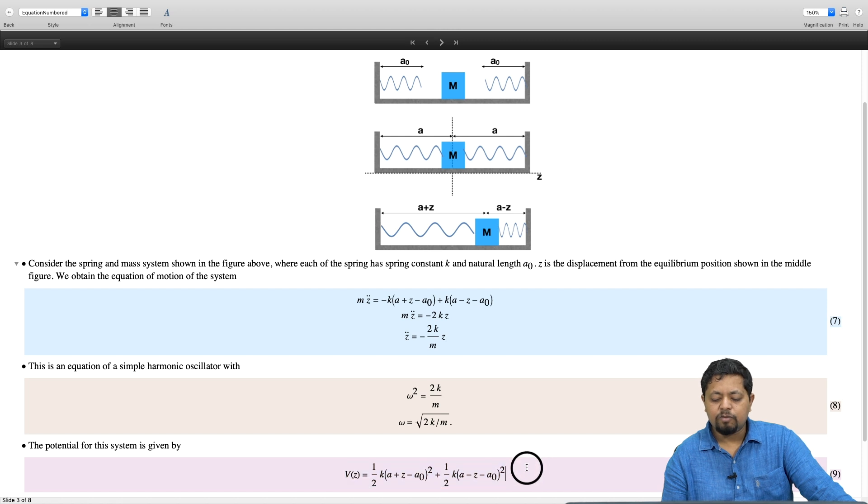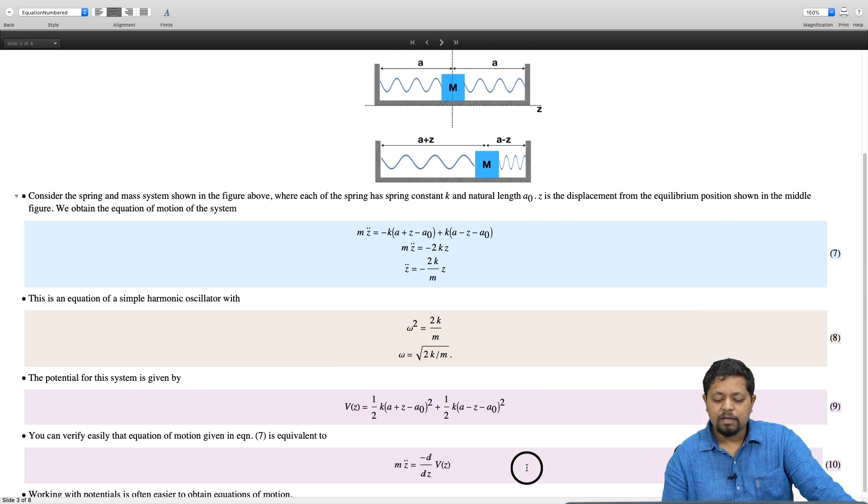And my equation of motion is simply given by mz double dot equal to minus d by dz of the potential because force is minus the gradient of the potential. Therefore, mz double dot is minus d by dz of the potential.